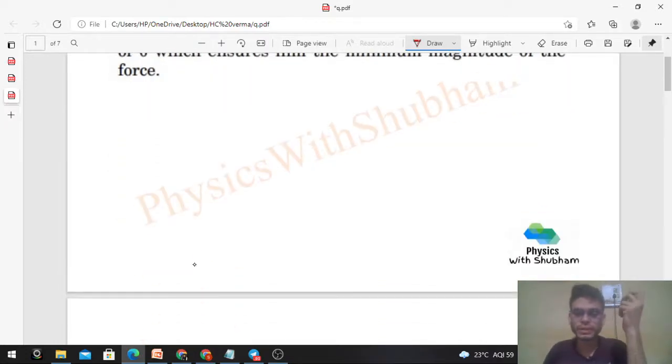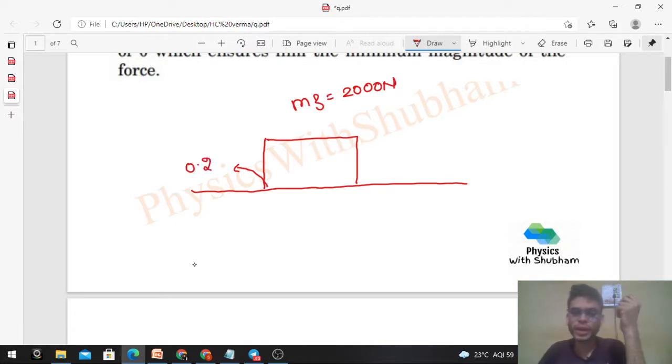First, let me discuss the setup. There's a horizontal surface with a block placed on it. The weight of the block is given as mg, which is 2000 Newton. The coefficient of friction between the block and surface is 0.2. You're applying some force F at an angle θ to pull this box, and the box has to move a distance of 20 meters.